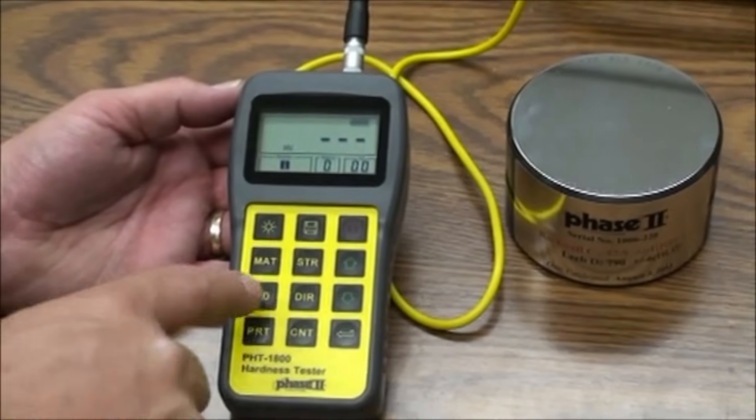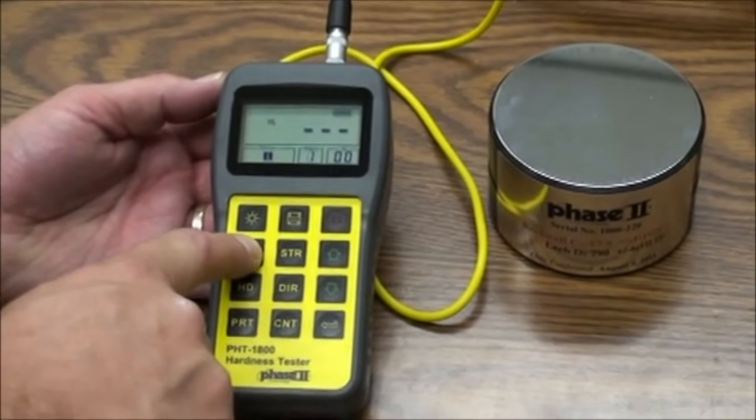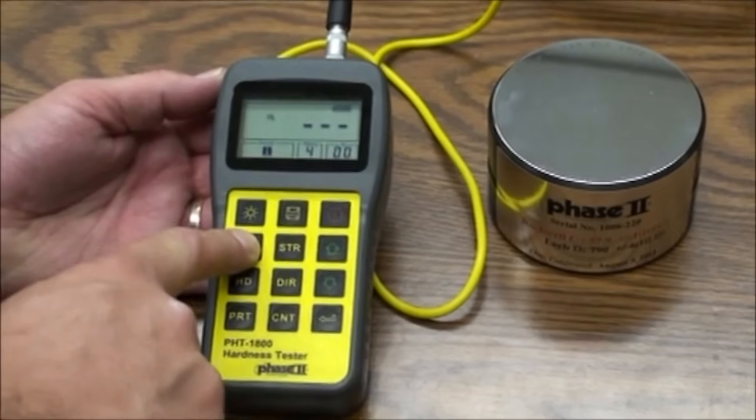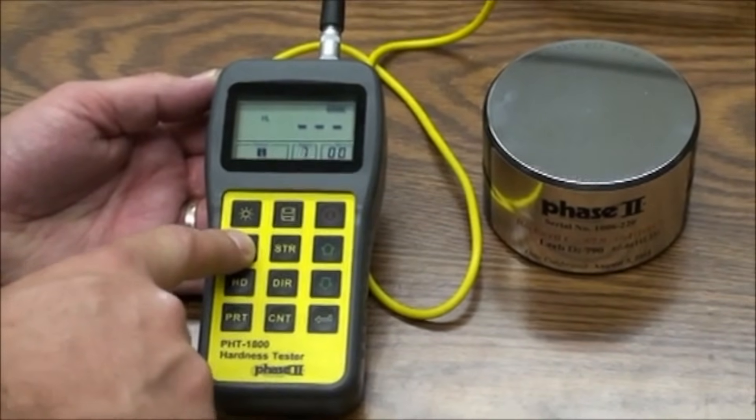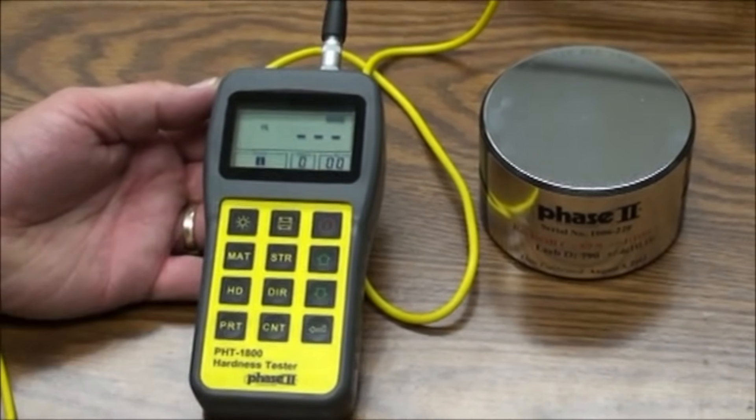Press the MAT button to preset the material you'll be testing. Continue pressing the material button to scroll through the menu. Stop at the correct number for the material of your choice.